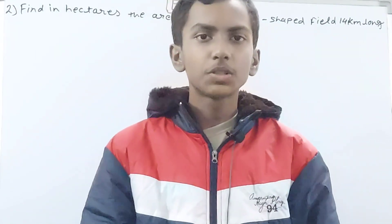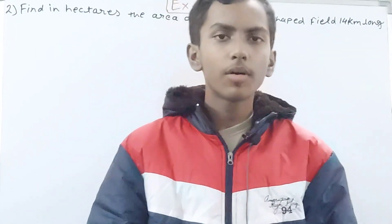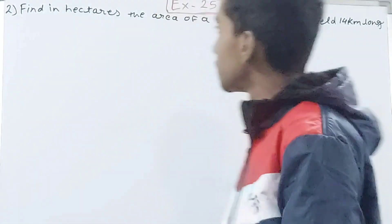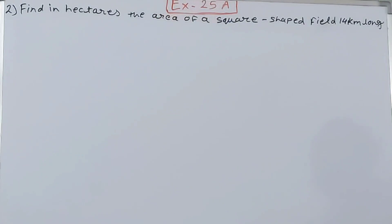Hello friends, welcome back to my YouTube channel and local learning. In this video we are going to solve ICSE Mathematics Class 8 Chapter 25, Area of Rectilinear Figures, Exercise 25, Equation Number 2. This is: find in hectares the area of a square shaped field 14 kilometers long.